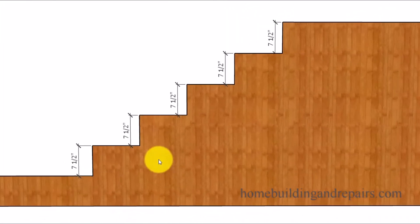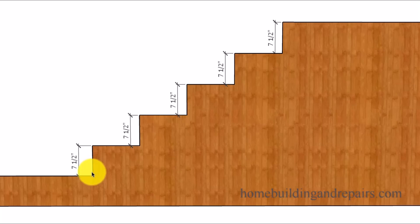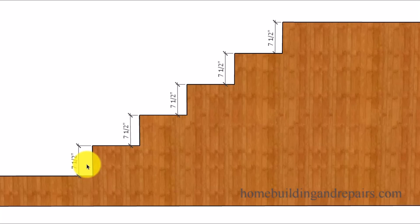The first thing I want to point out is that we're trying to figure out the individual riser height — the height of each step going up the stairway. Second, each one of them should be the same size. Third, building codes usually allow a variance of up to three-eighths of an inch maximum.